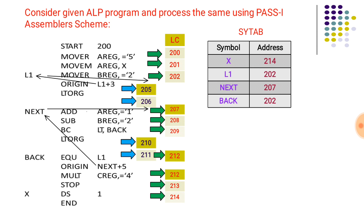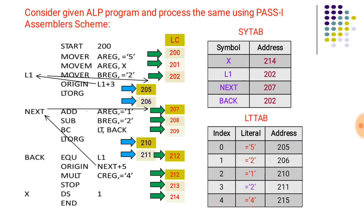The data structures used in pass one are the symbol table, the literal table, and the pool table. In this program, the symbols found are: X at line number 201, L1 which is a label at line number 202, NEXT which is a label at line number 207, and BACK at line number 212.